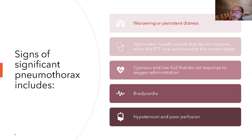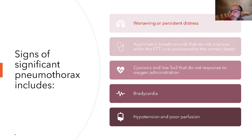Tension pneumothorax usually presents as sudden worsening of symptoms. On physical exam, there is decreased air entry on the affected side — even after repositioning the endotracheal tube in an intubated baby. The baby becomes cyanotic and unresponsive to oxygen. When the heart becomes compressed, you may see bradycardia, hypotension, and poor perfusion due to compression of the heart.